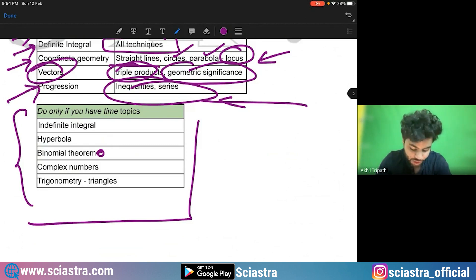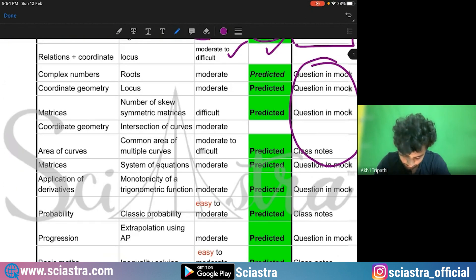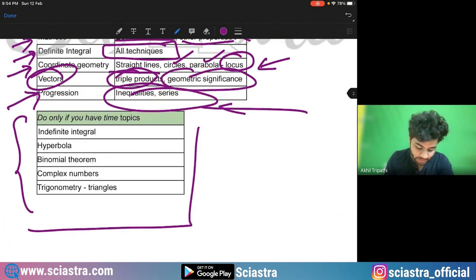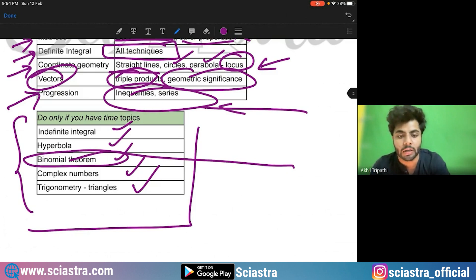Last time, last year, actually a question came from binomial theorem. If you see here in the analysis, I had told you. So these are the less important topics and chapters: definite integral, hyperbola, binomial theorem, complex numbers, trigonometry. However, question might come, for example, from binomial theorem question can come, but the probability is less. That's what I'm saying.